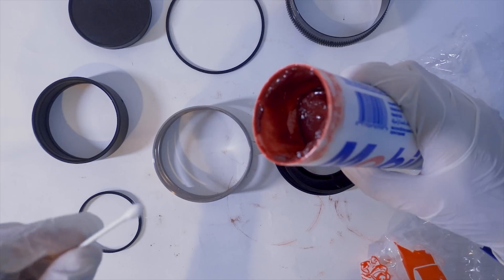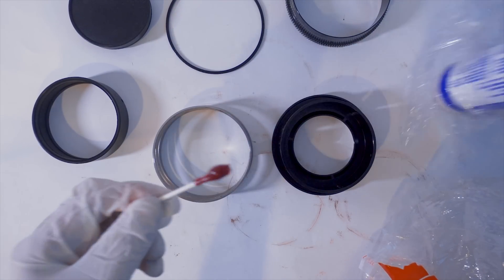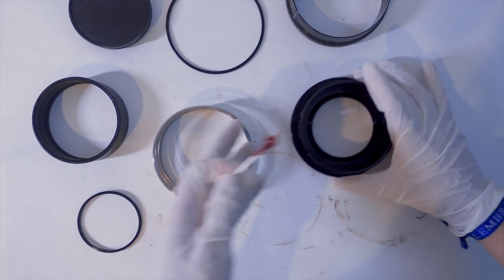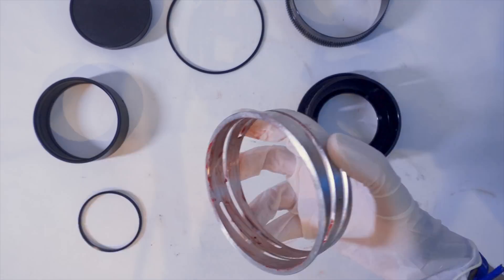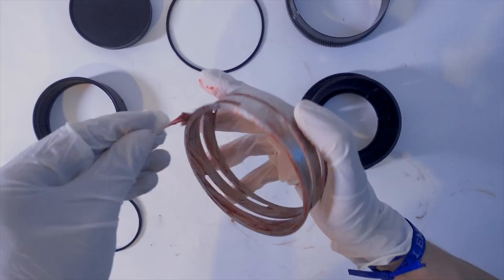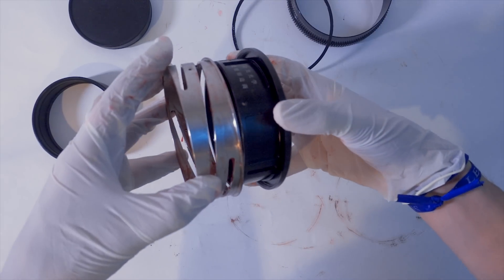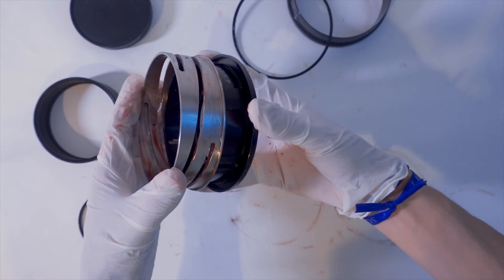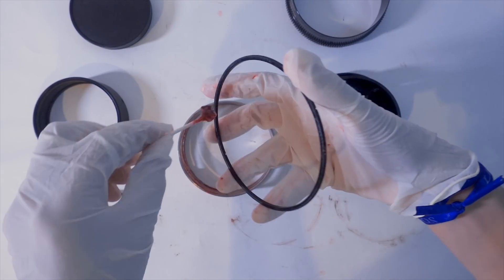We got the grease that John Barlow recommended, Mobil 28, which is an aircraft grade grease. I used q-tips to spread good amounts of it as evenly as I could over the helicoid. Also, I'm doing this without gloves and it really sucked. The best way to clean out the grease is lighter fluid and that messes up your skin. Don't be like me.